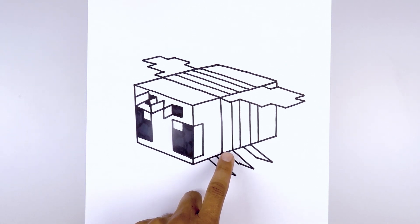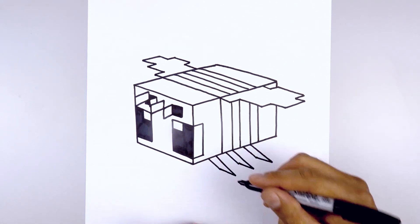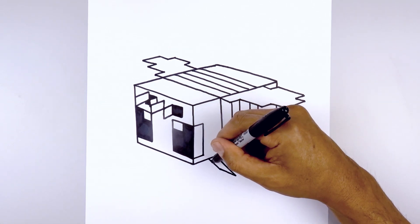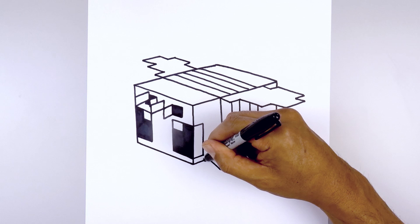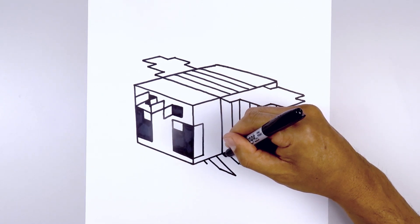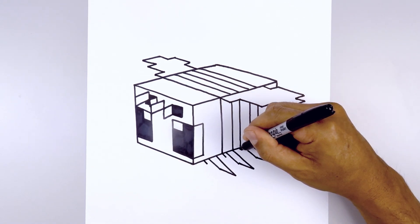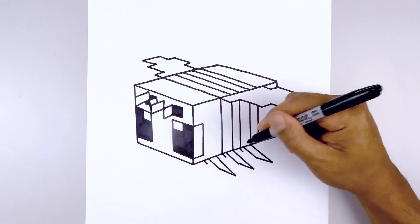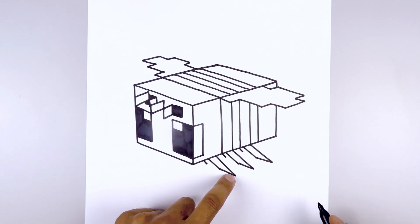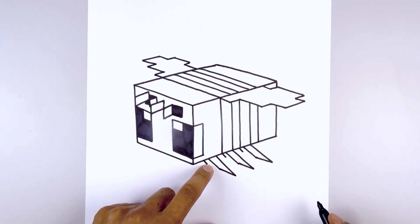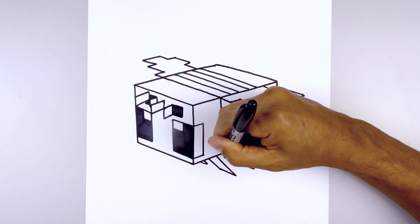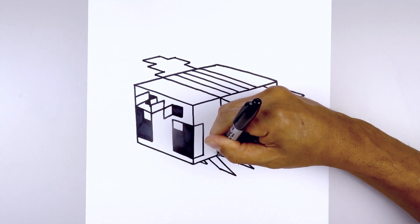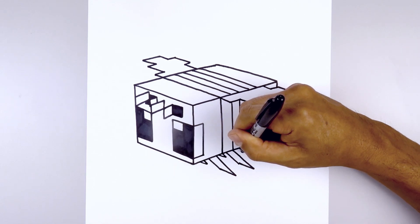Now we'll just see the tip of the hind legs in behind. From this line, step over towards the left and draw a short line coming down. Do the same thing beside each of the legs, following that same angle going up and in behind the body. Do that to all three legs in the back.